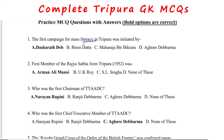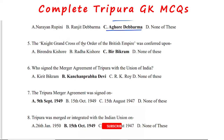The first campaign for mass literacy in Tripura was initiated by Dasarad Deg. The first member of Rajya Sabha from Tripura was Arman Ali Munshi. The first chairman of TTADC was Narayan Rupini. The first executive member of TTADC was Aghur Depurma.